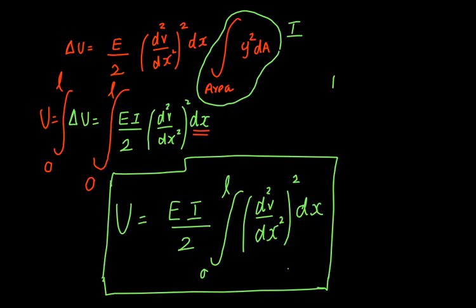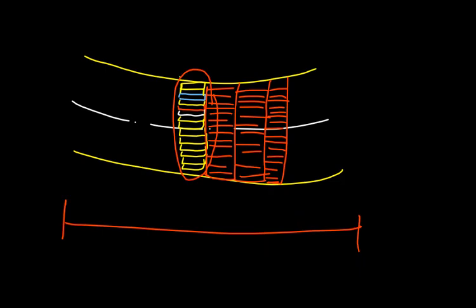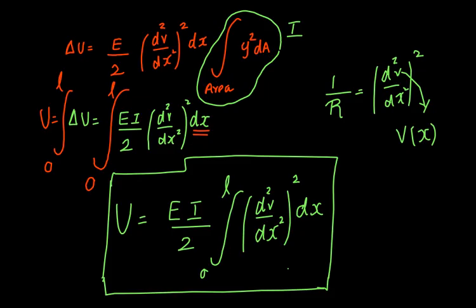Note that 1/R — which equals d²v/dx² — is not constant with respect to the length, because deflection v is a function of position along the beam. So (d²v/dx²)² cannot be pulled outside the integral over length. However, 1/R is constant with respect to the cross-sectional area, so it was correctly treated as a constant in the area integration. This is the final expression for strain energy stored in a beam. Thank you so much.